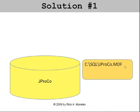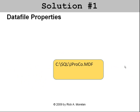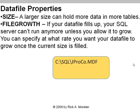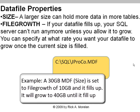Solution number one addresses the problem of your data file not being big enough. There are data file properties like size — a larger-sized data file can hold more tables or more data. You can also set the file growth. If your data file fills up, SQL Server can't run unless the data file is allowed to grow. You can specify at what rate it will grow. For example, if you have a 30-gigabyte data file and it fills up, do you want it to grow to 31 or to 40? How much incremental growth do you want every time it fills up — that's the file growth.